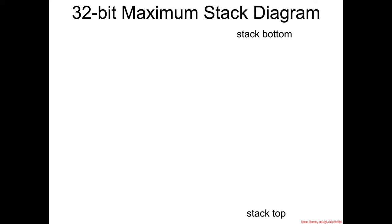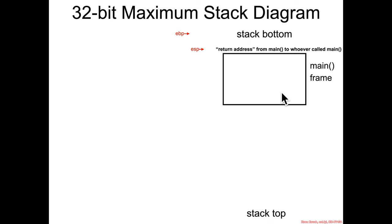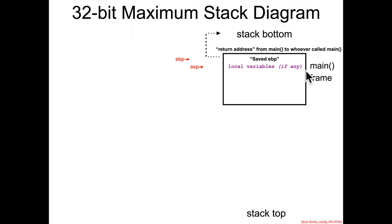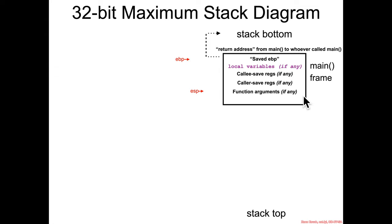Now you're ready to see the maximum stack diagram — the complete picture now that we've learned about calling functions, passing parameters, local variables, callee-save registers, and caller-save registers. In 32-bit with 32-bit calling conventions, each frame always starts with saved EBP, then local variables if any, then callee-save registers if any, then before calling a function it saves any caller-save registers, pushes any function arguments, and when it finally calls, it pushes the return address to get back to the caller.